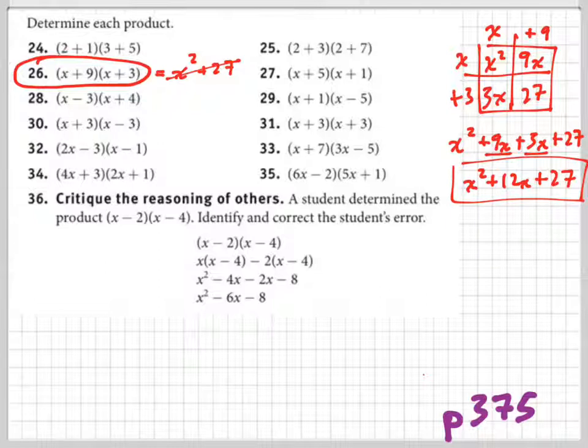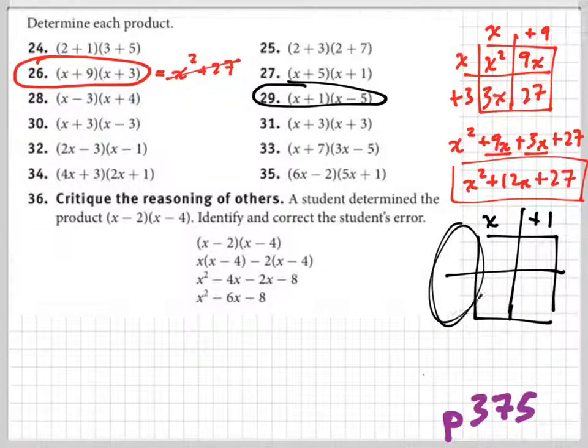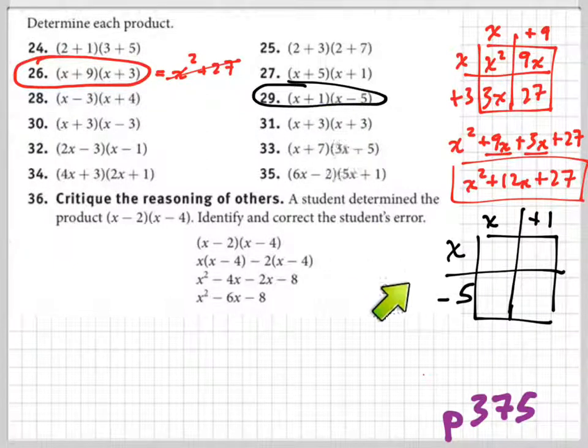Now I need you guys to try a different one. We're going to try number 29. I'm doing the box way, there's other ways to do it but I'm doing the box. Jasmine, give me two terms I could put right here. X plus 1. And what do I put over here? X minus 5.